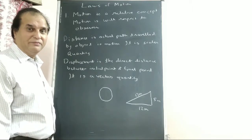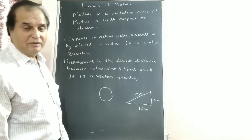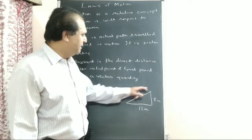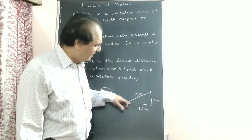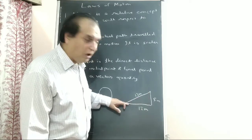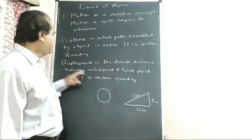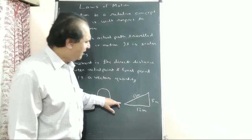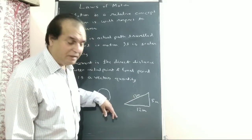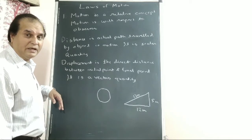Distance and displacement — what is the difference? Distance is the actual path travelled by an object in motion, and it is a scalar quantity because we measure by magnitude only. Suppose A is going to B's house: first he walks 12 meters, then turns left and walks 5 meters. So the distance travelled is 12 + 5 = 17 meters.